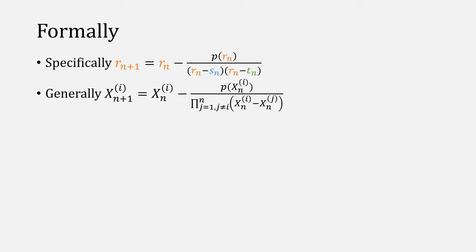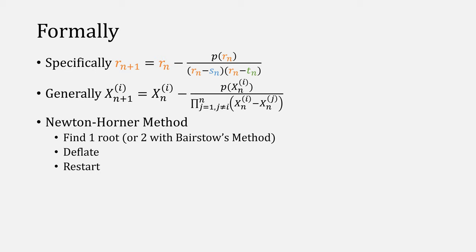Regarding notation, we've been using this form, but more generally we can write it using this expression. The difference between Durand-Kerner and Newton-Horner is that Newton-Horner finds one root at a time, then deflates it and restarts the process, where with Durand-Kerner, we're finding all roots simultaneously.